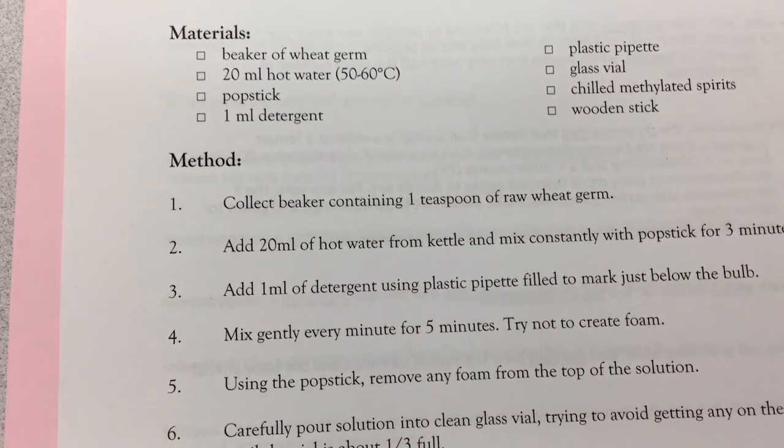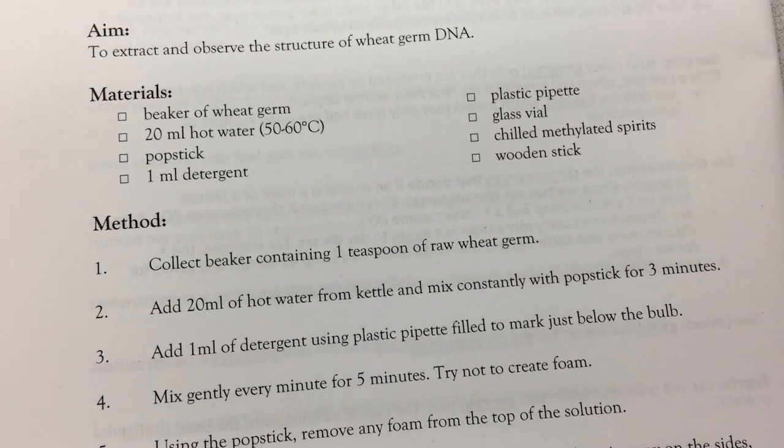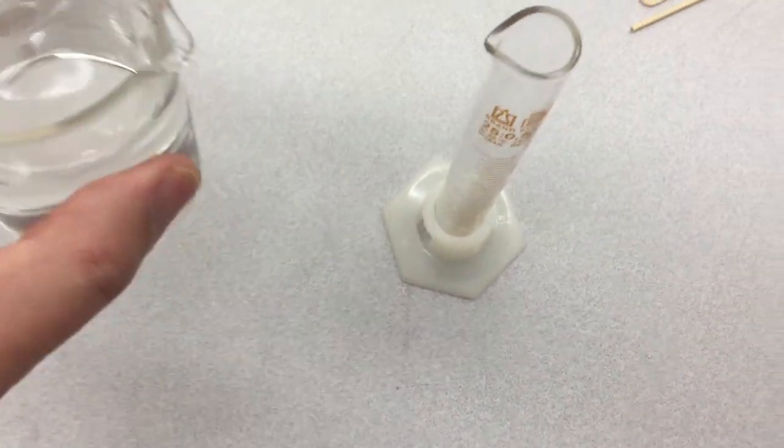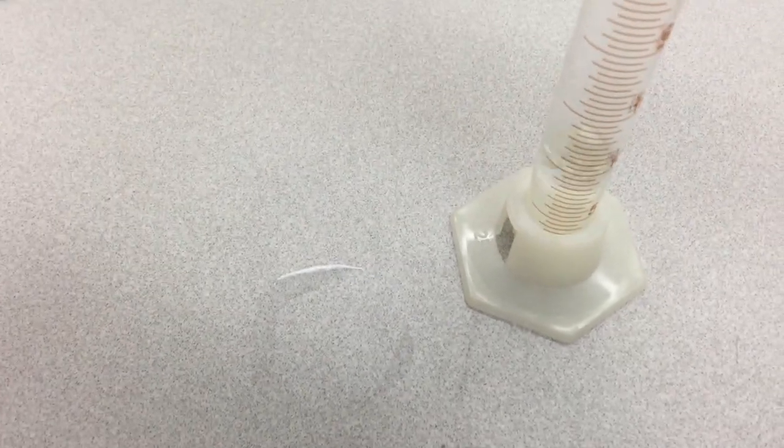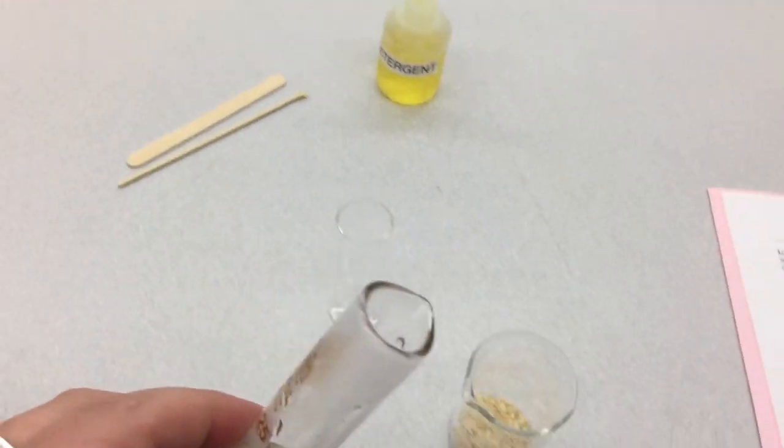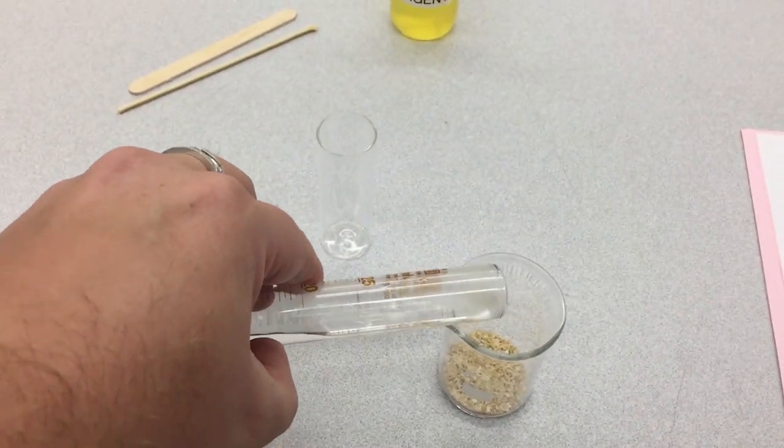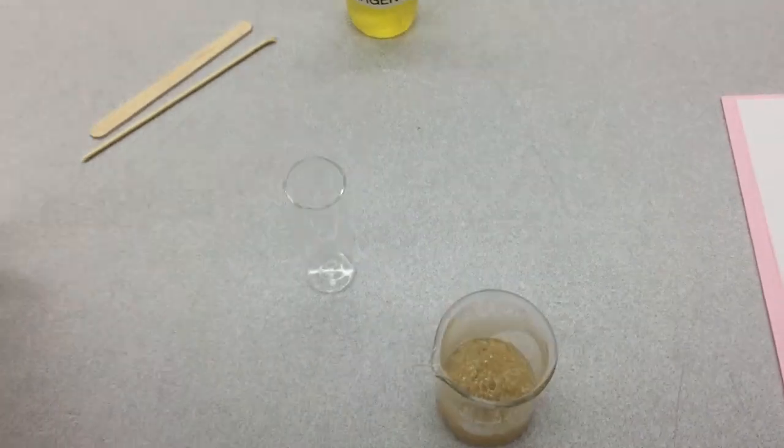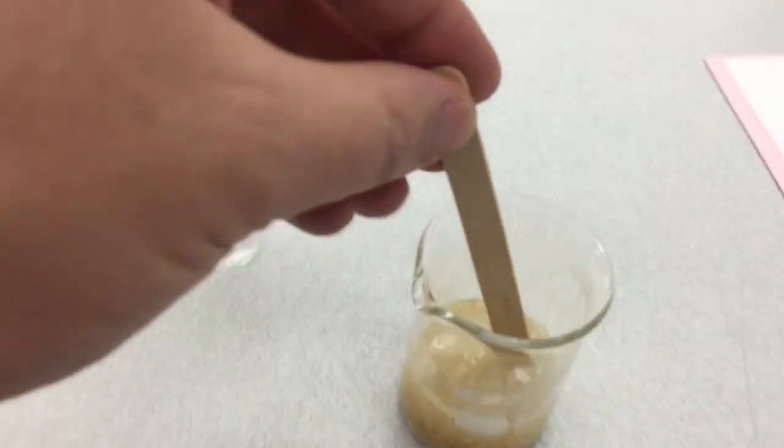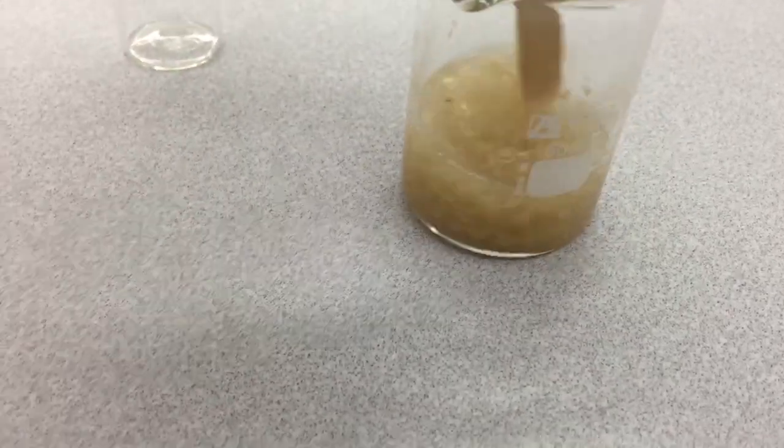Step 1 is to take our beaker with 1 teaspoon of raw wheat germ, and to add 20 mils of hot water from the kettle, and mix constantly with popstick for 3 minutes. So I have a beaker rather than the kettle here. And I'll add this to our beaker of wheat germ, and I'm going to take a popsicle stick and mix quite vigorously for about 3 minutes.